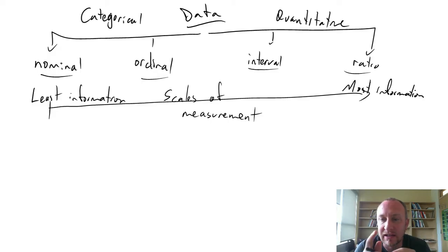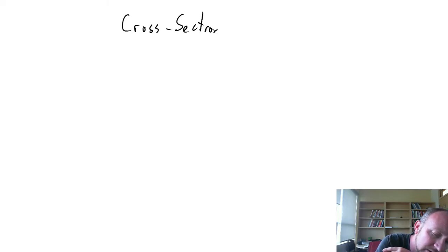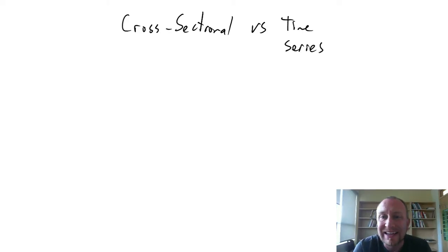Then we'll look at data in slightly different ways. In addition to this measurement scale defining how much information a variable contains, we'll also look at data in terms of cross-sectional data versus time series data. So as the name implies, cross-sectional data—we're just looking at a specific point in time. How many cars were produced in June of 1999? So we're looking at a specific point in time and obtaining the values for a particular variable at that point in time.